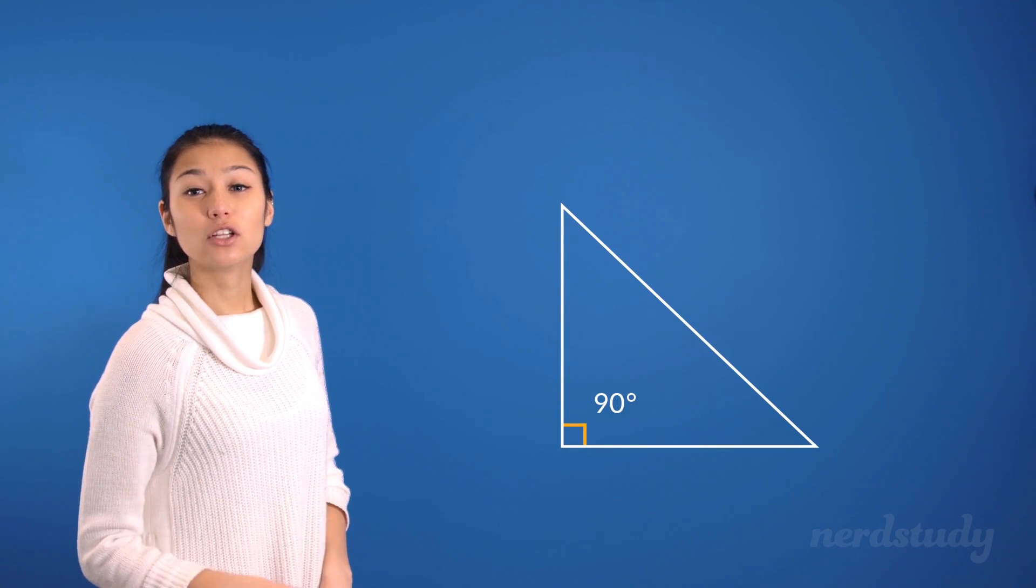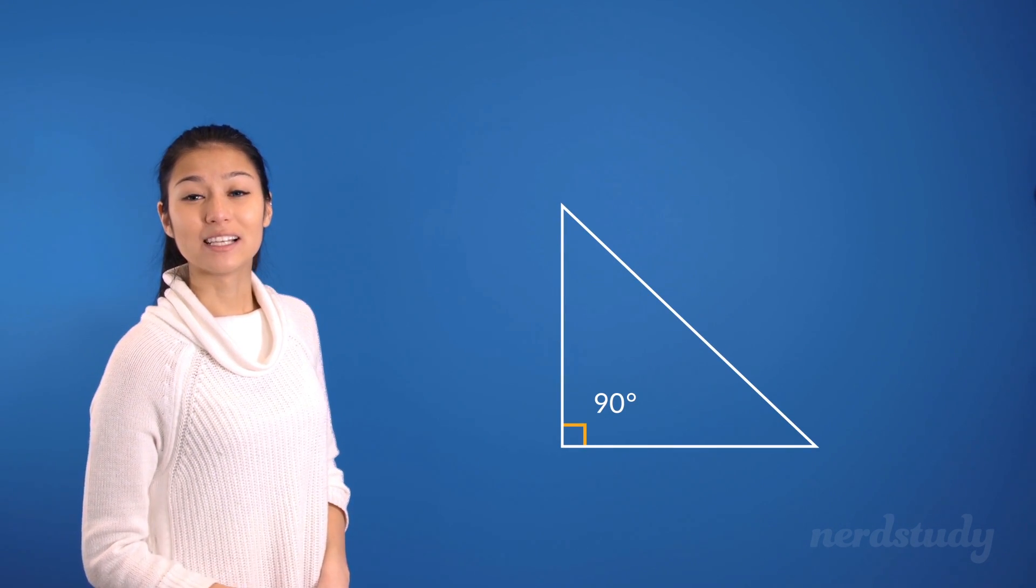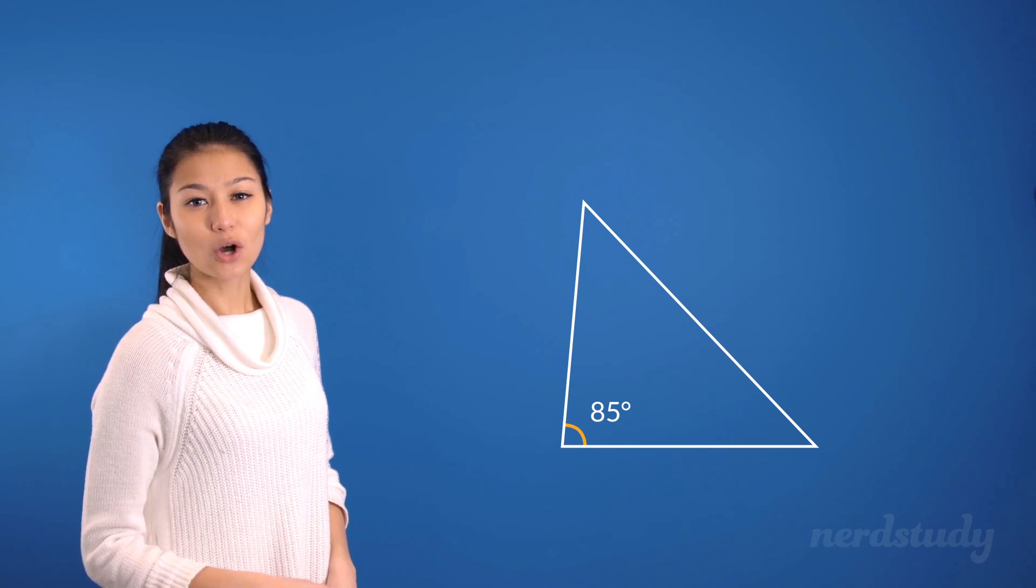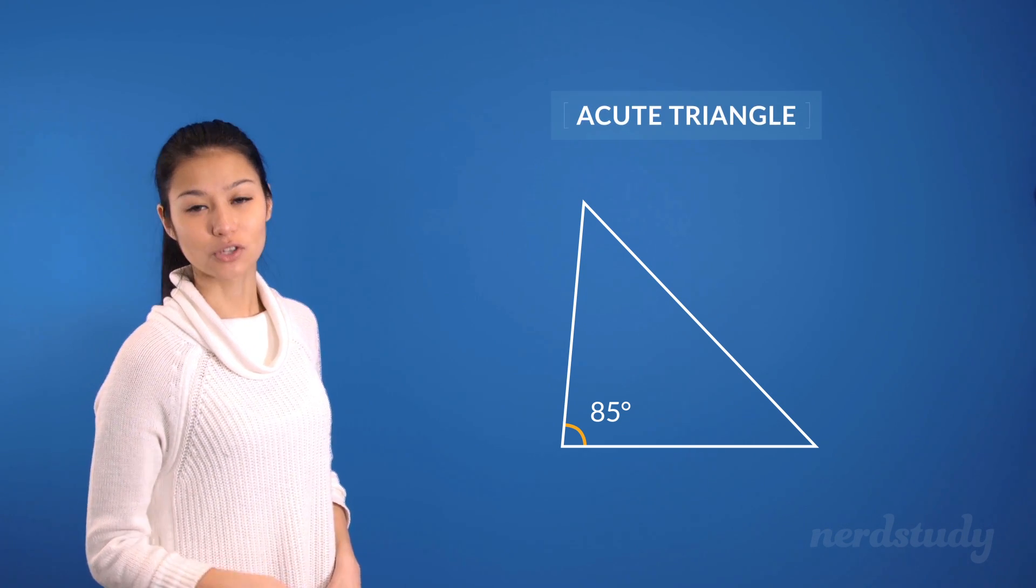However, if the largest angle within a triangle is less than 90 degrees, then we would instead call this type of triangle an acute triangle.